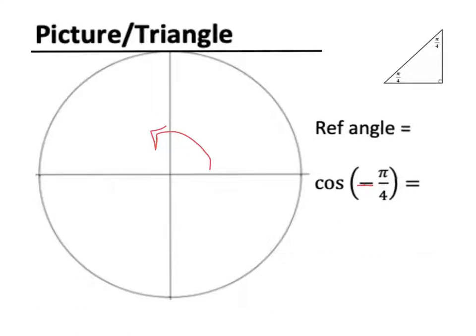If you remember, pi over 4 is 45 degrees. So we're going to rotate backward like this, 45 degrees.